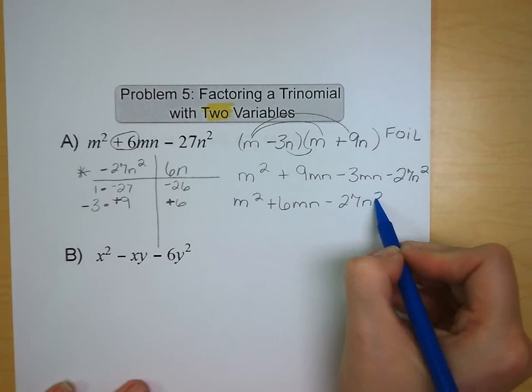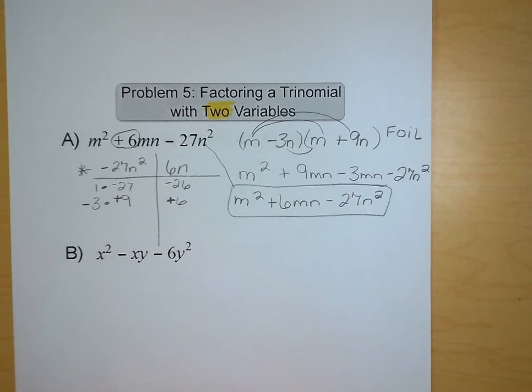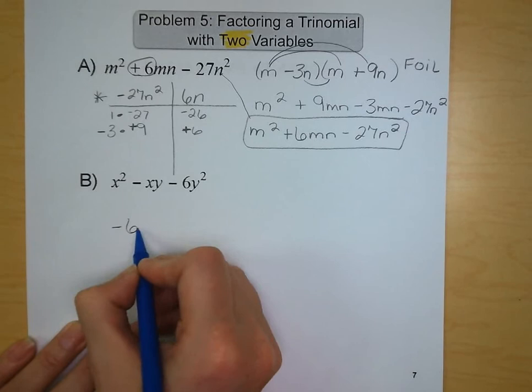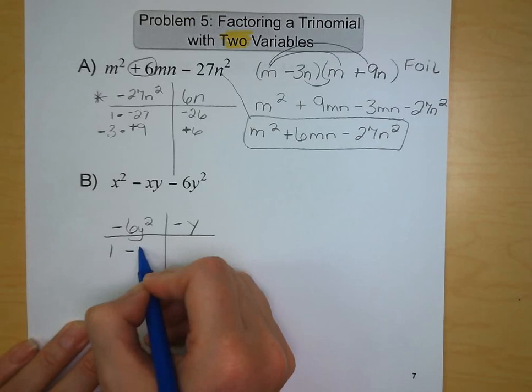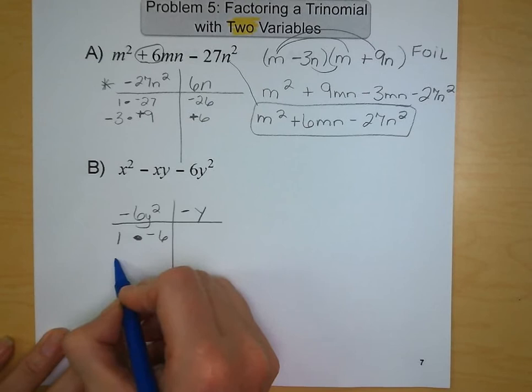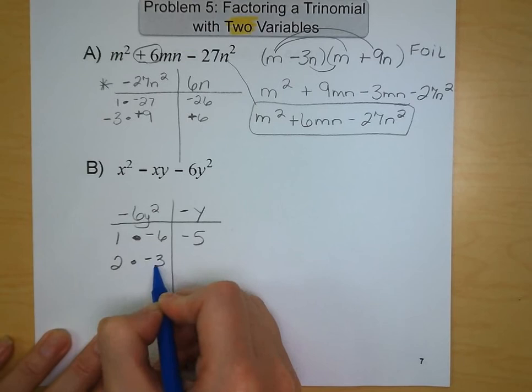Our second example, letter B, we've got products of -6y² that are going to add up to -y. We've got 1y and -6y. That's going to give us -5y. It doesn't get us there. We've got a positive 2 and a negative 3. That helps us because that adds up to -1.